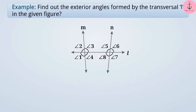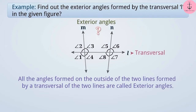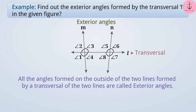In the given figure, line L is the transversal of lines N and M. All angles formed on the outside of the two lines by a transversal are called exterior angles. The angles formed by transversal L outside the two lines M and N are angle 1, angle 2, angle 6, and angle 7. Therefore, all these angles are exterior angles.